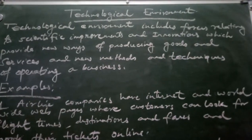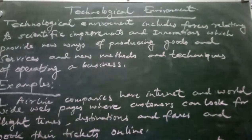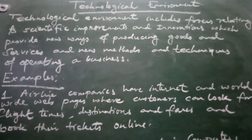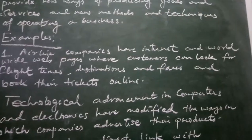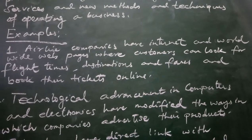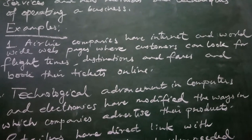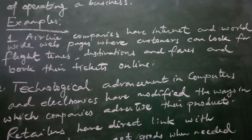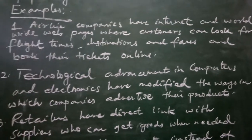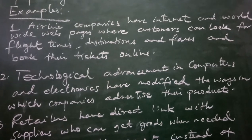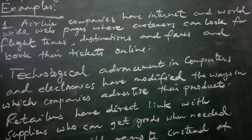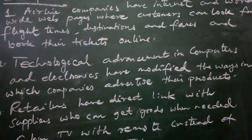The next element of business environment is technological environment. Technological environment includes forces relating to scientific improvements and innovations which provide new ways of producing goods and services and new methods and techniques of operating a business. Technology has a greater impact on how the business functions. For example, airline companies have internet and worldwide web pages from which consumers can look for flight times, destinations, and fares, and book their tickets online.